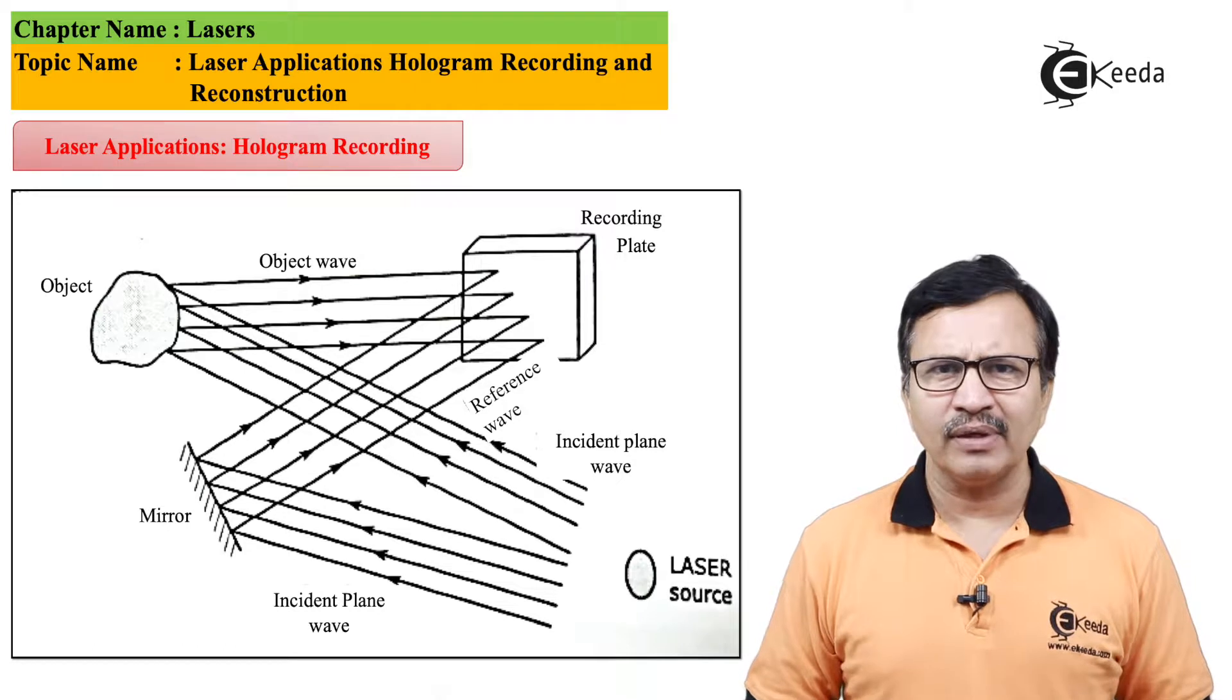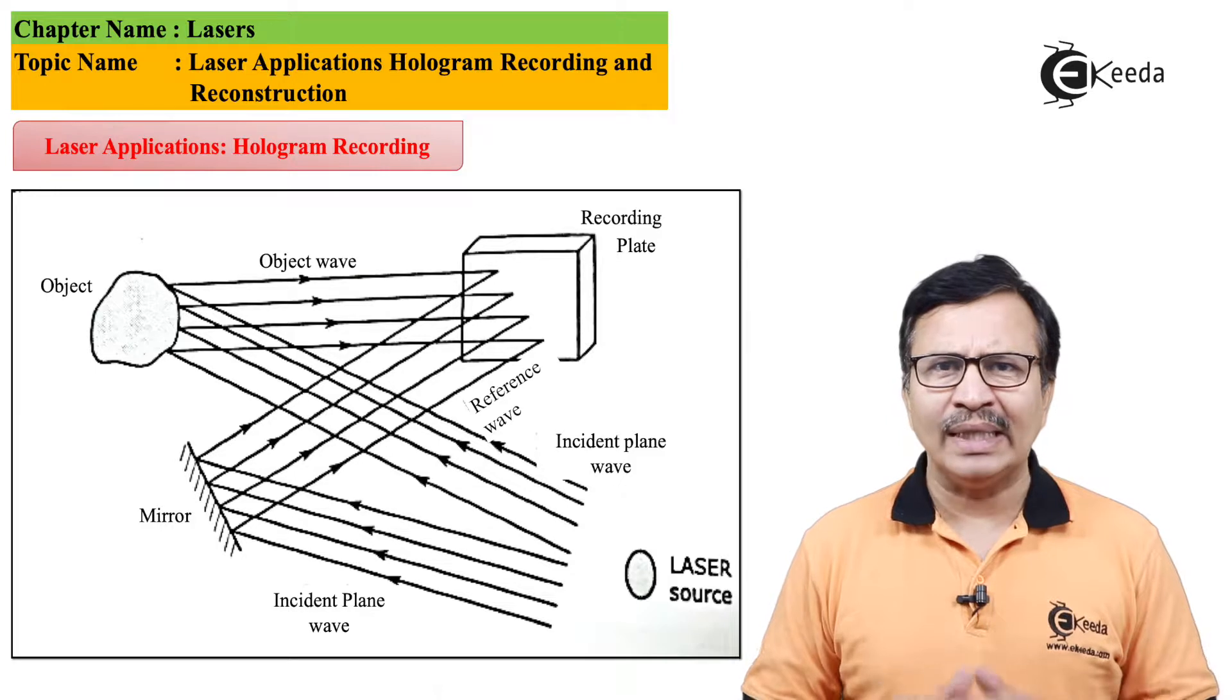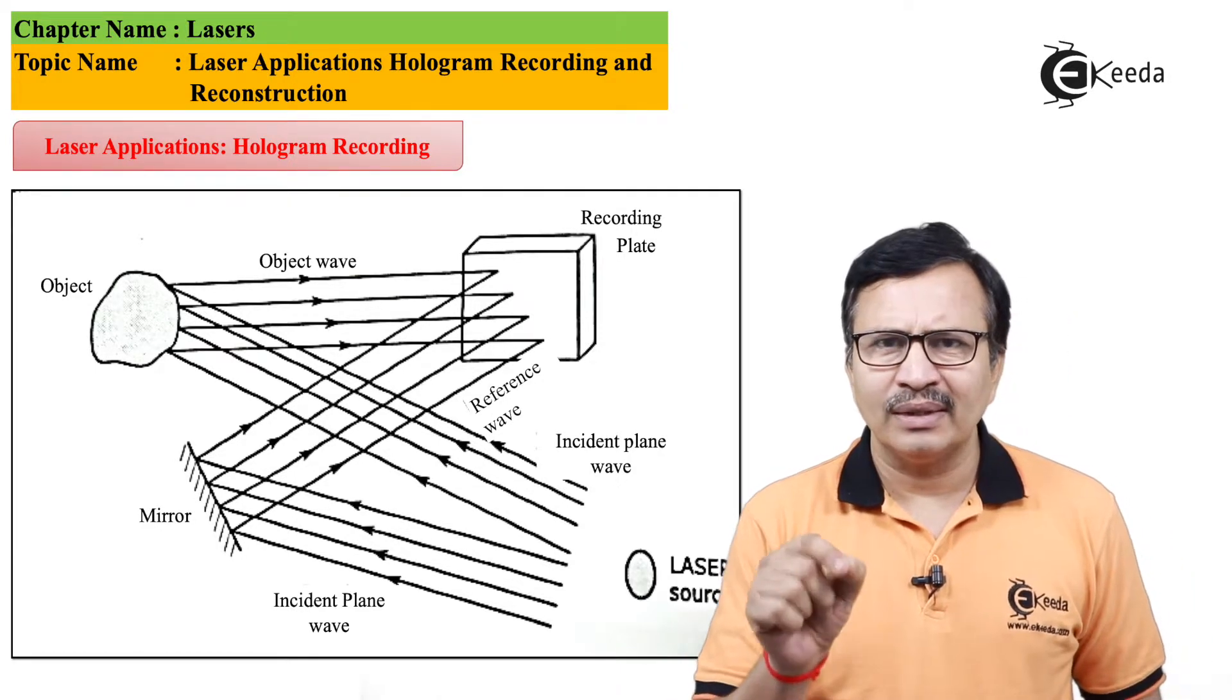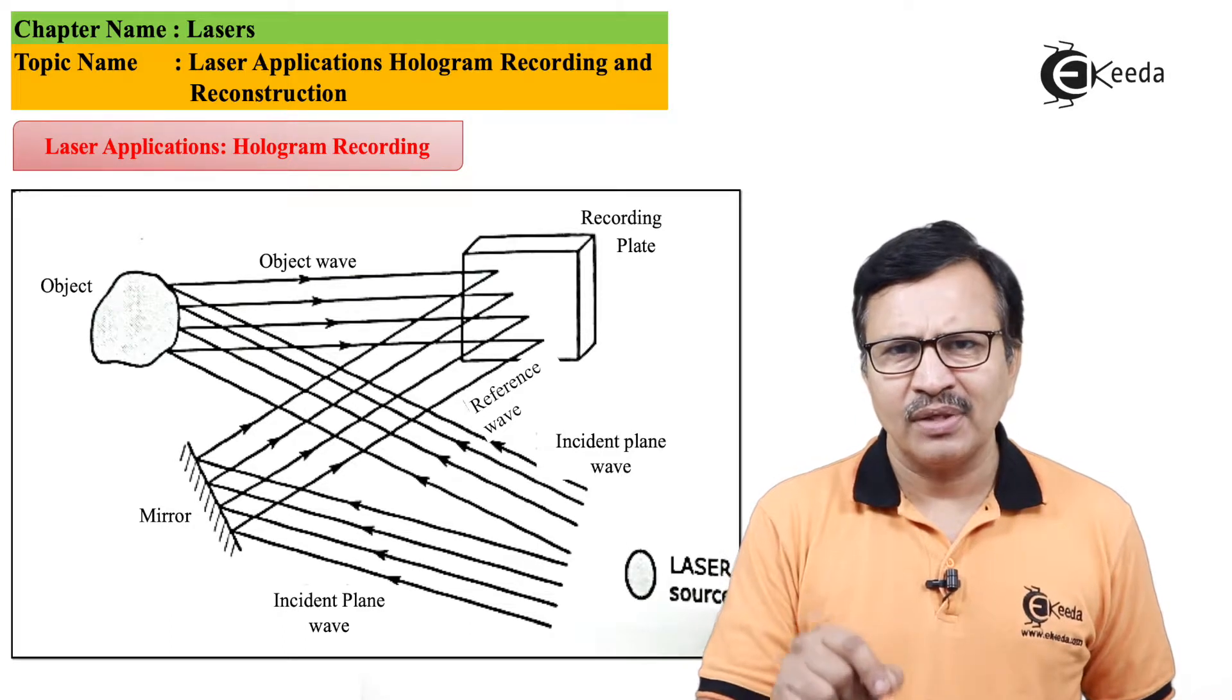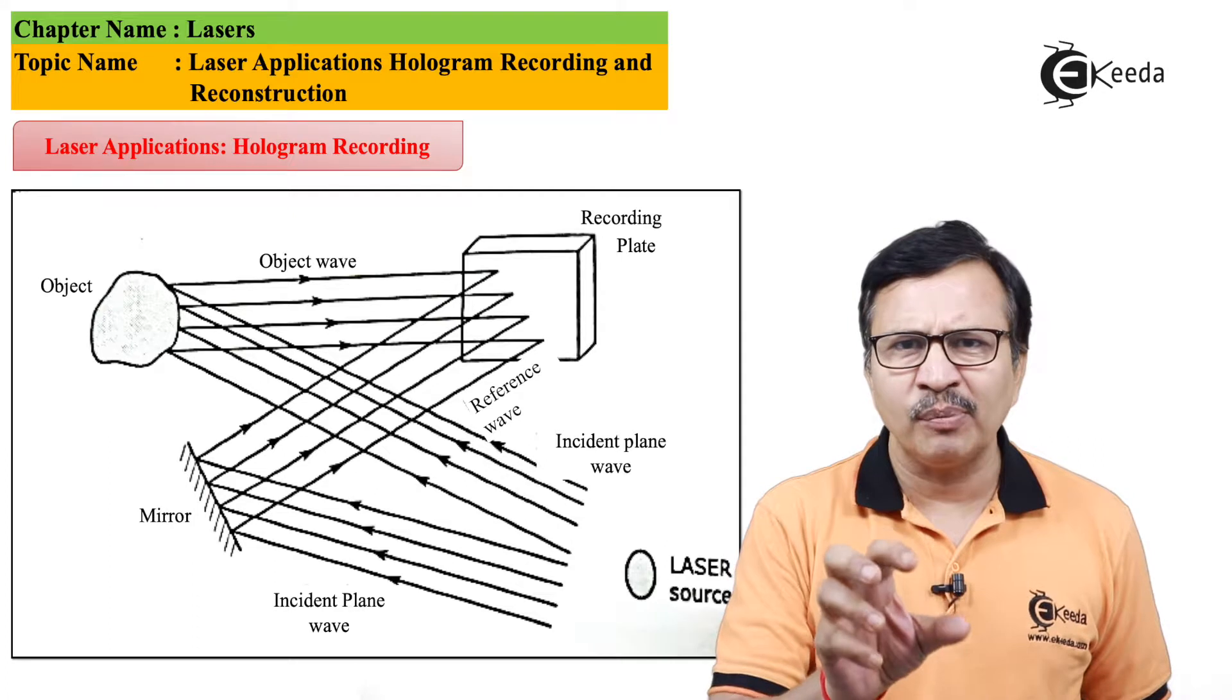A photograph is basically a 2D image wherein it only gives us the distribution of the intensity of light. In contrast, a hologram is called a 3D image because it captures not only the intensity but also the phase of a particular object.